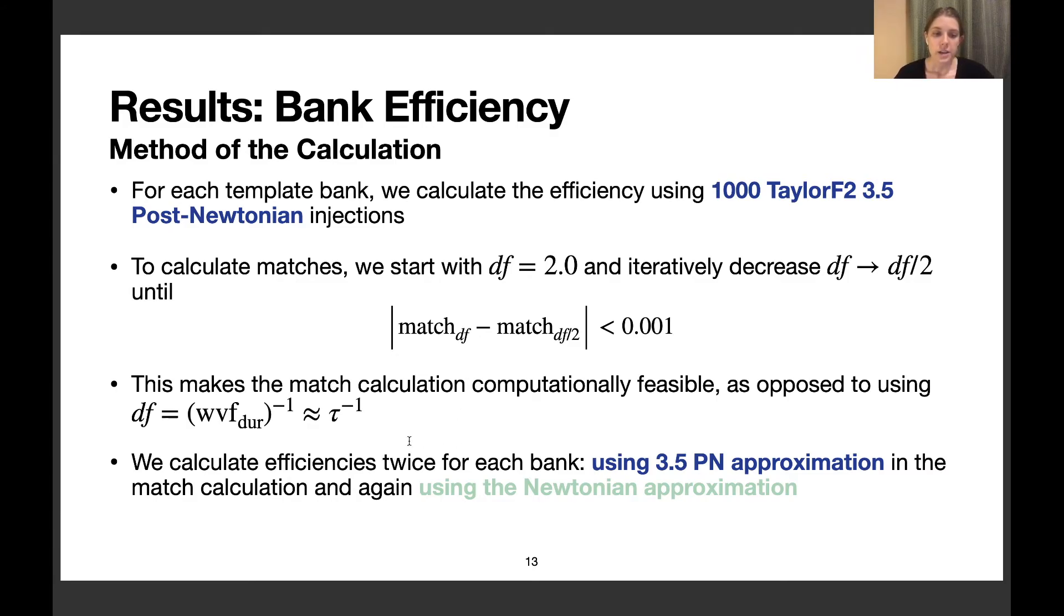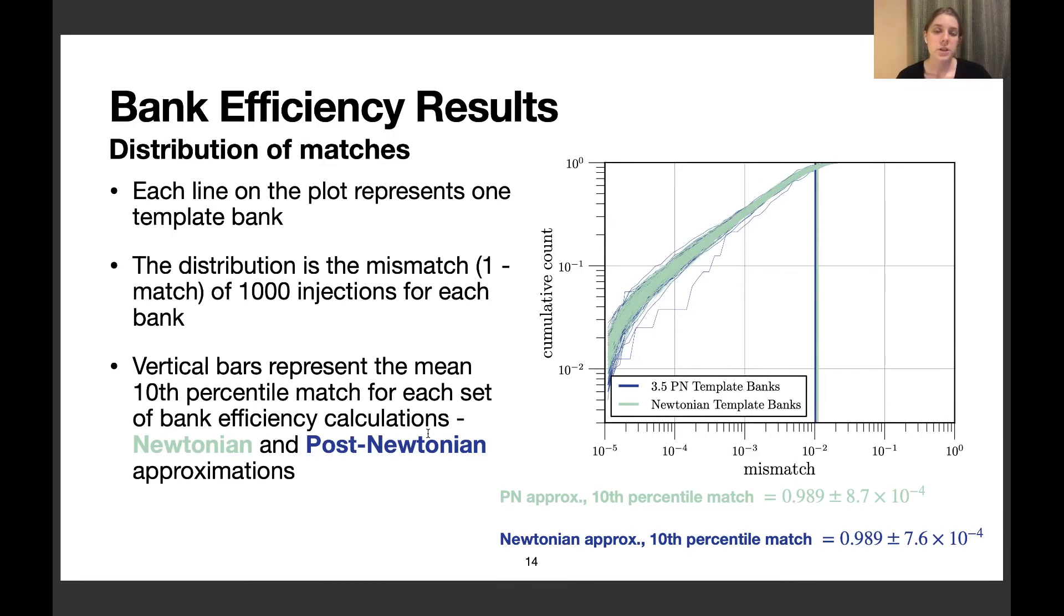We calculate the efficiencies twice for each bank: once using the 3.5 post-Newtonian approximation in the match calculation, and again using only the Newtonian approximation. Here are the results of all these bank efficiencies. On this plot, each line is a template bank, and the distribution is over the mismatch, or 1 minus the match, of 1,000 injections for each bank.